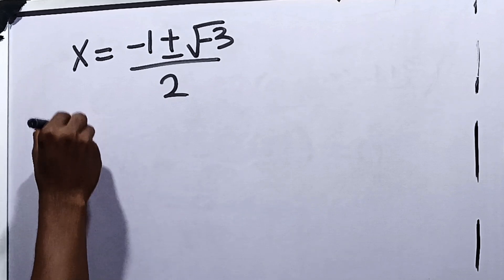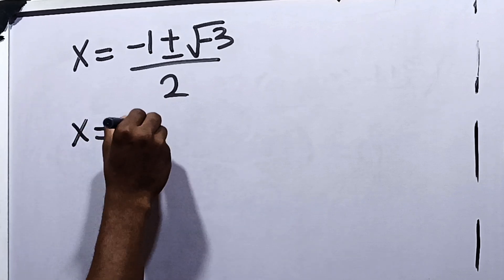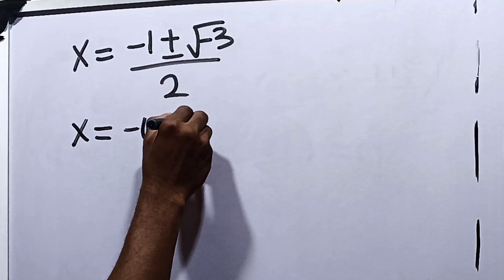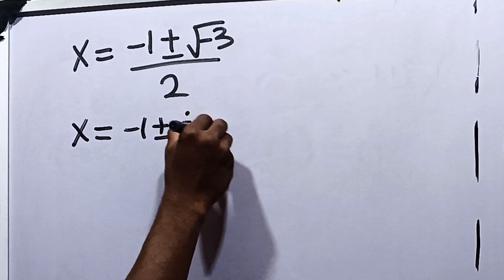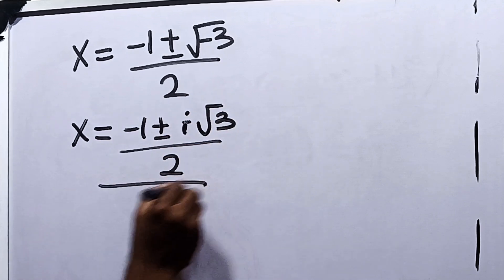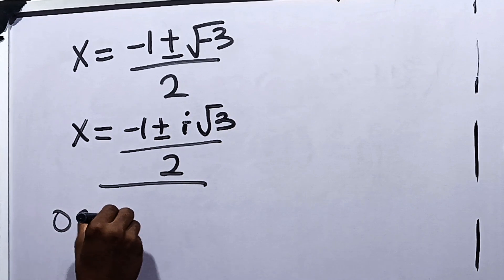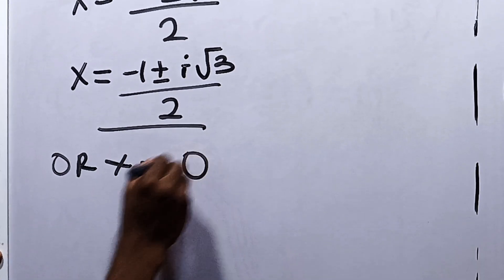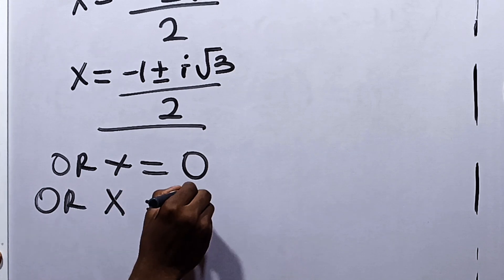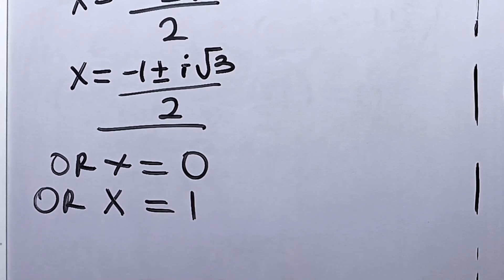So we can now say that x is equal to minus 1 plus or minus root of negative 3, which can be expressed as i times root of 3, all over 2. So this is what our x is, or x is equal to 0, or x is equal to 1. So these are the four answers for x in the equation.